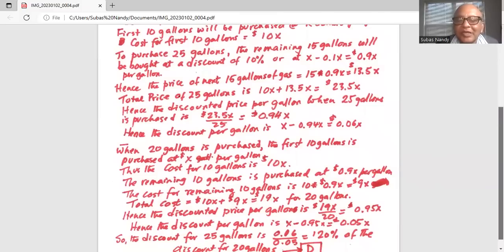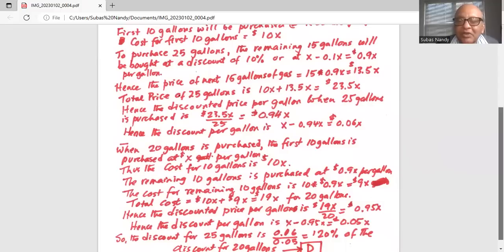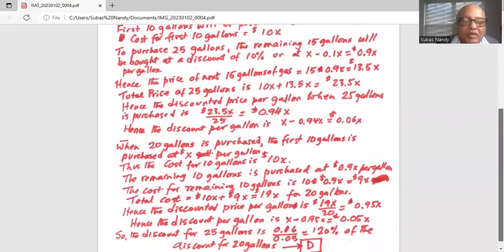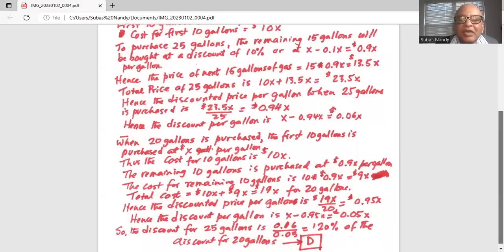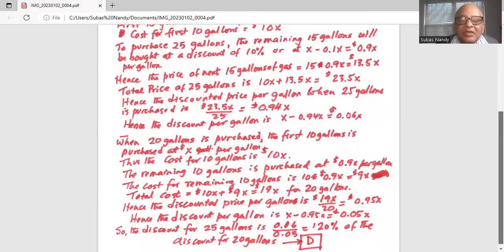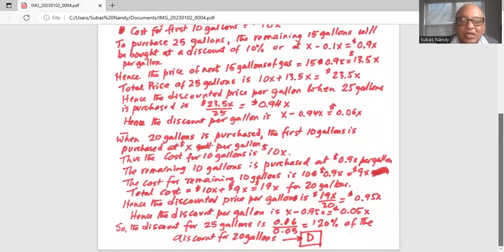Hence the discount per gallon is X original price minus 0.95X, which is 0.05X. So the discount for 25 gallons, which is 0.06X, divided by 0.05X, which is the discount per gallon when 20 gallons is purchased. So 0.06 divided by 0.05 is 120%.